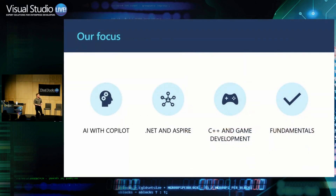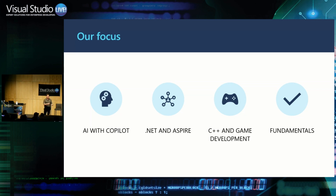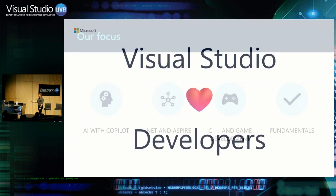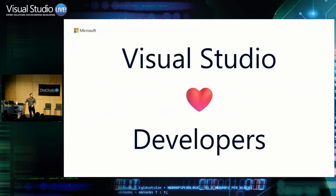We're doing this with four focus areas: AI and Copilot as a main area; then .NET, including Aspire; then C++, and under C++ we have a lot of gaming — Visual Studio is one of the biggest gaming development environments out there for both AAA studios and hobbyists; and then the Fundamentals. Fundamentals means performance is good, we don't have paper cuts, things work as expected, and we're productive. This is what we need to make sure we deliver on.